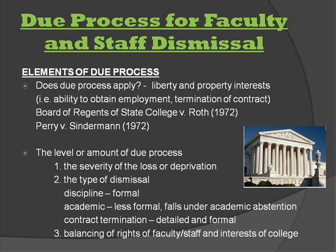The level or amount of due process depends on three criteria. One, the severity of the loss or deprivation to the employee. Two, the type of dismissal — discipline dismissals are formal; academic dismissals are less formal and fall under academic abstention, which is the differential treatment to decision makers in higher education; and contract termination, which is detailed and formal. Three, the balancing of rights of faculty and staff versus the interests of the college.